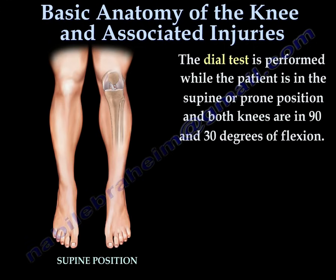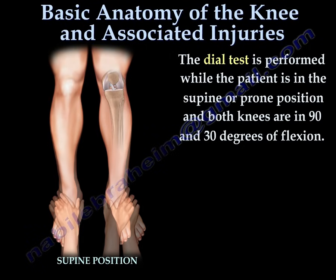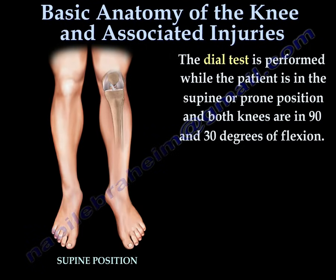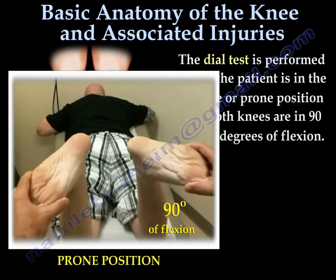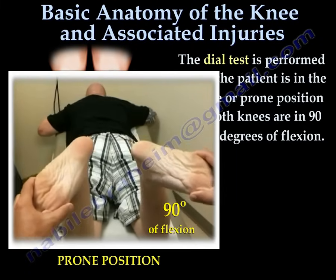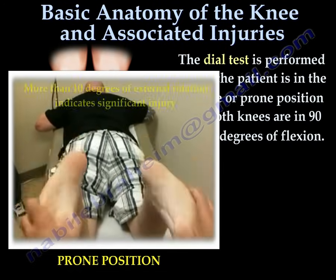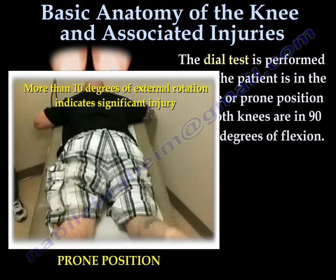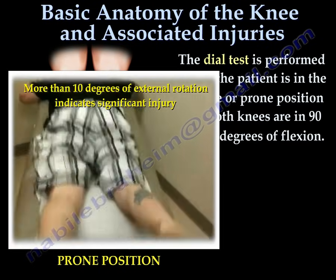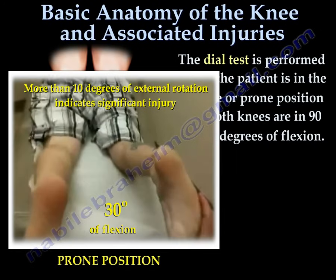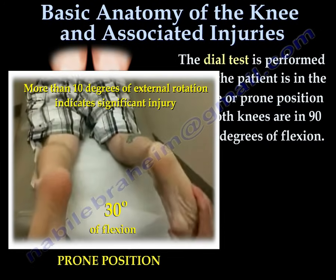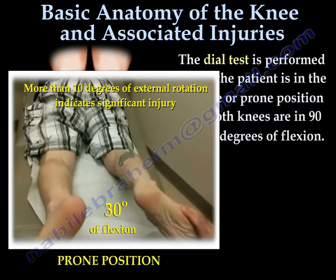The dial test is performed while the patient is in either the supine or prone position and both knees are in 90 and 30 degrees of flexion. An external rotational force is then applied to both of the feet. The amount of external rotation to each lower extremity is then measured at both angles. Flexion at the 90 degree position will test the posterior cruciate ligament. More than 10 degrees difference between the normal and injured extremity indicates a significant injury. Testing of the injured extremity in 30 degrees of flexion is done to determine injury to the posterolateral corner.